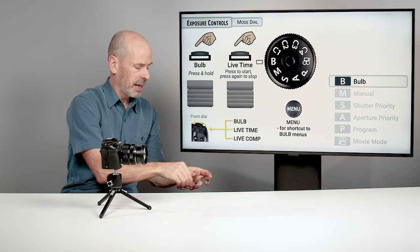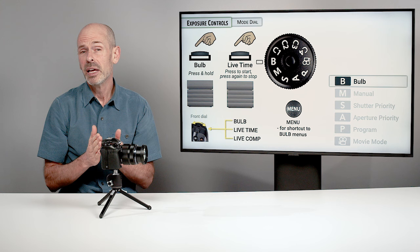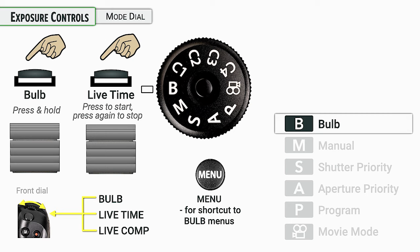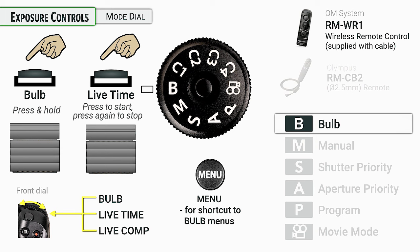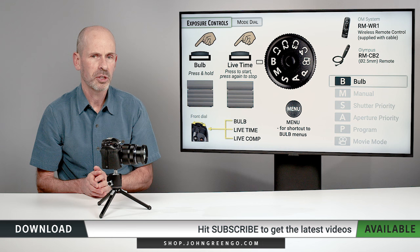When doing bulb exposure with the camera in dark conditions, you don't want a really bright screen ruining your night vision. If you're going to be doing this type of photography, I recommend using one of the cable releases or wireless releases available for the camera — this way you can have the camera on a tripod and not be touching it when you want to start and end the exposure.